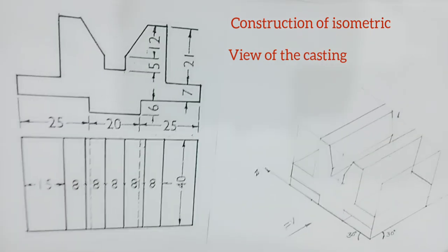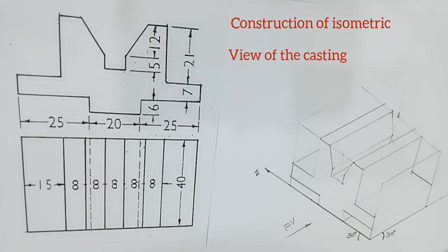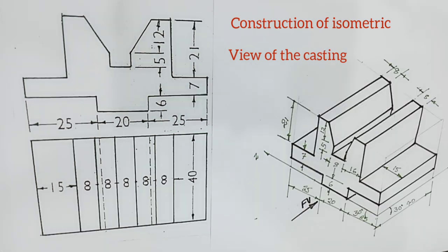Drawing this casting is completed. Now we have to darken the required lines — construction lines should be kept as they are but made lighter. Darkening of the required lines is completed, and the dimension part is also completed. That's how we converted orthographic projections into isometric views. I hope everyone understood well — thank you all.